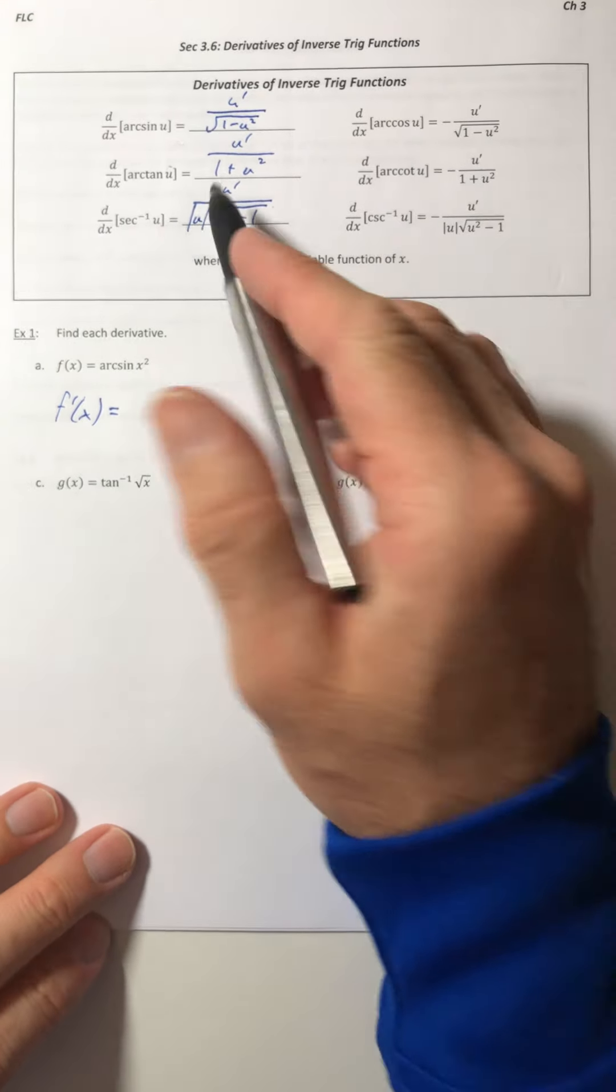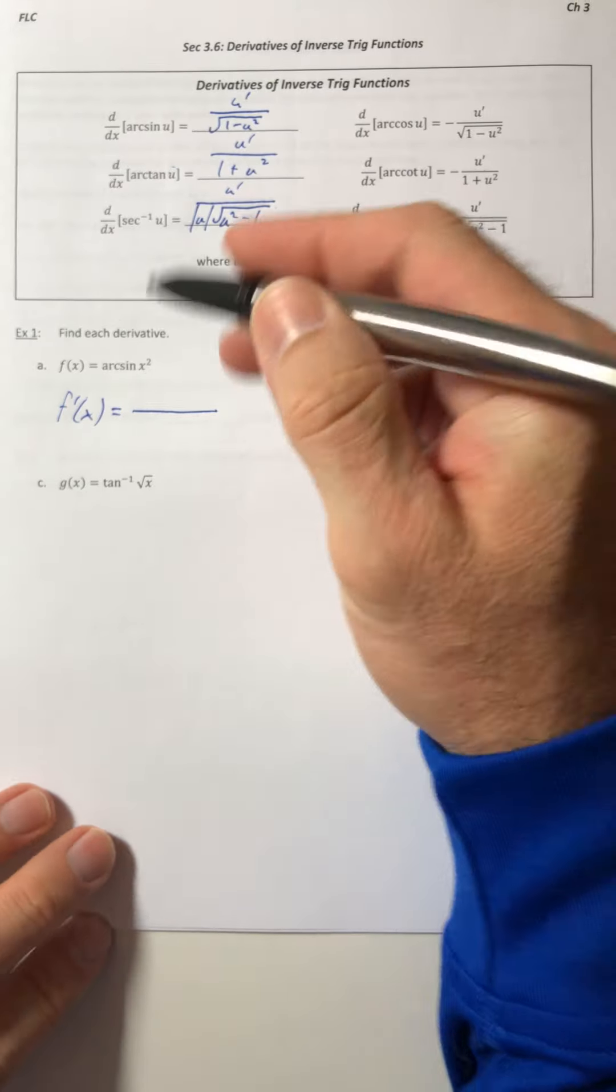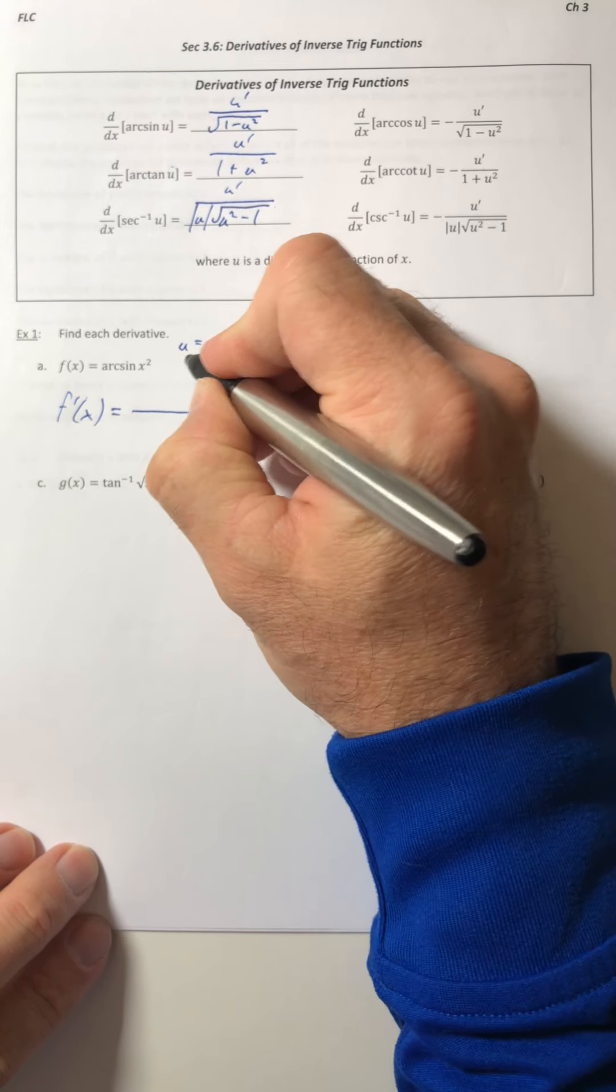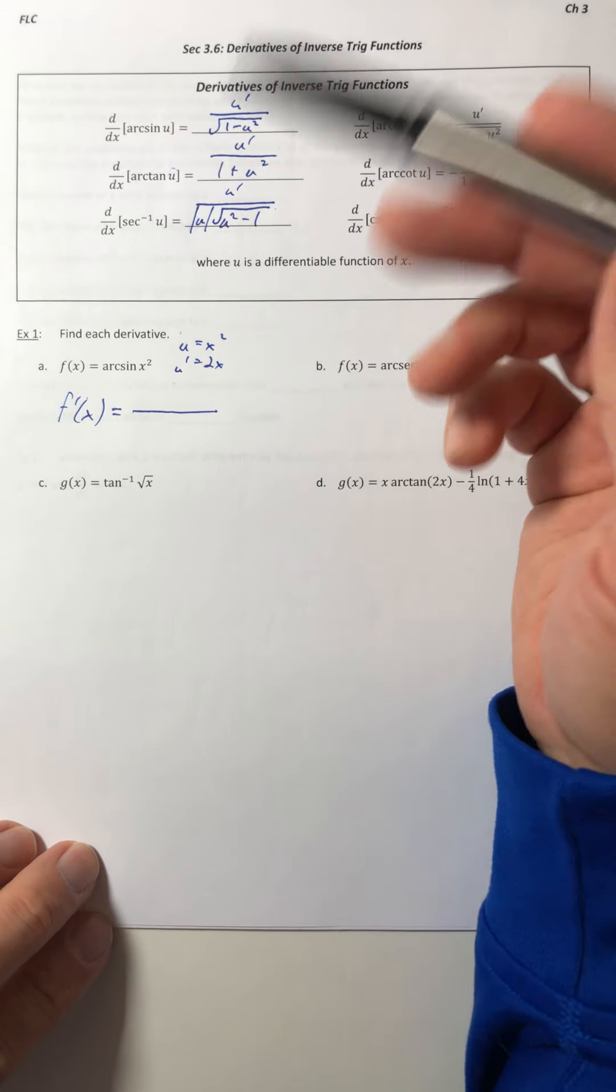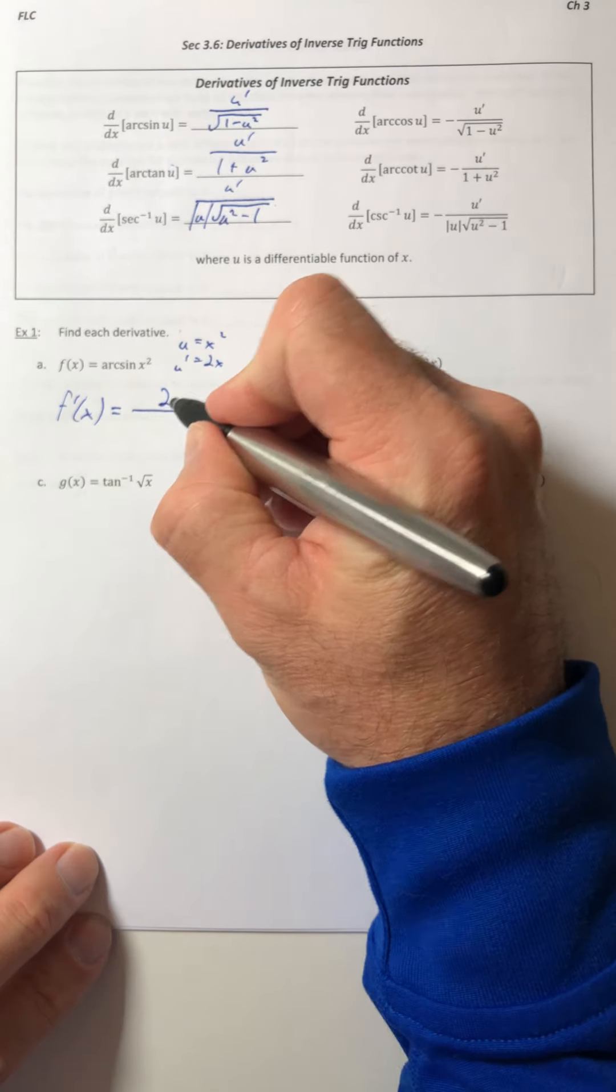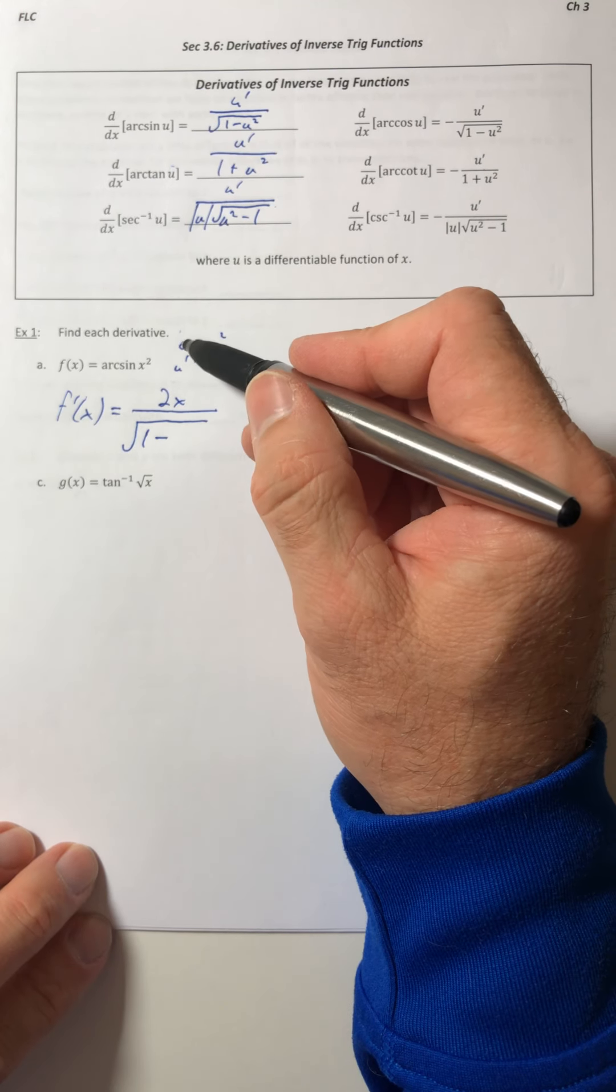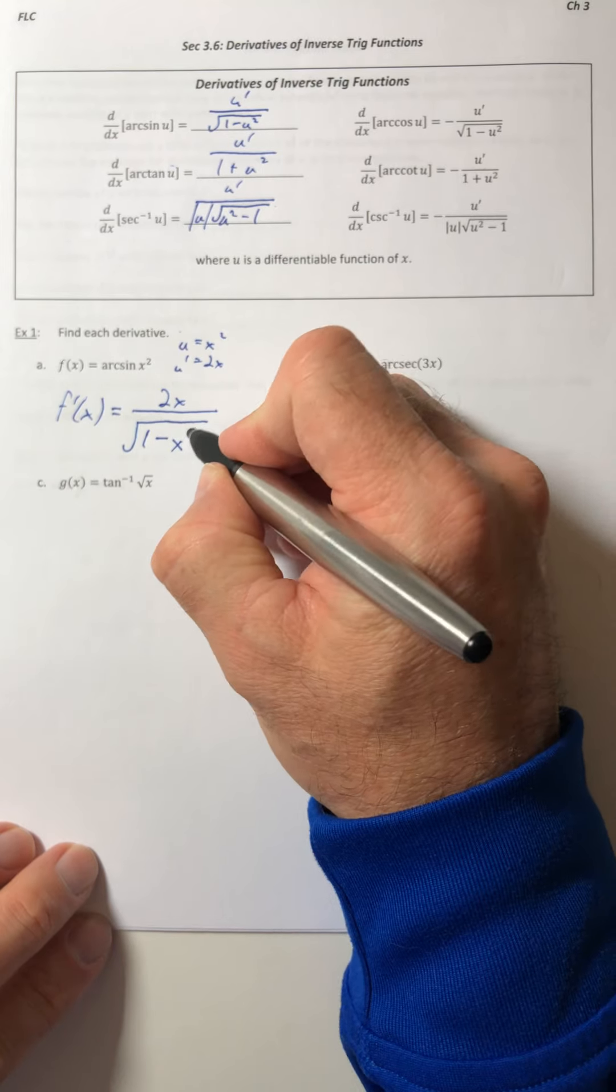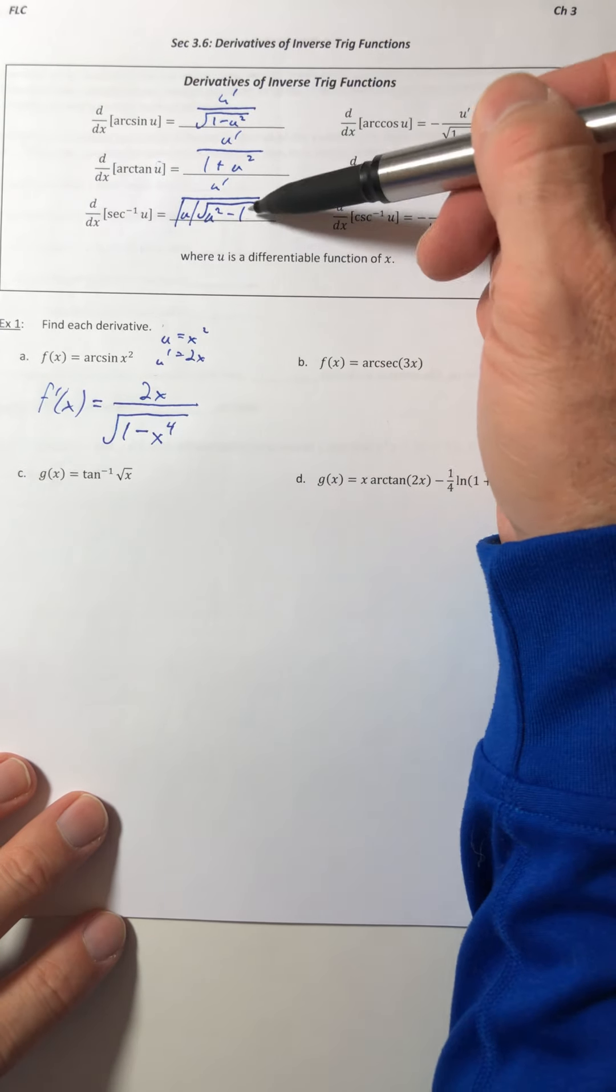So we're just going to start using the rules. So arc sine of x squared. So the x squared is what's inside. So I want the derivative of x squared. That's the u. So the u is your x squared, which means u prime is 2x. So you can write this out, you can think it in your head, it's up to you. But regardless, u prime is on top. So the 2x goes up there. And then it's over root 1 minus the u squared. Well, if u is x squared, I got to square that and make it x to the fourth. So these derivatives, they can go kind of fast, as long as you know the formula.